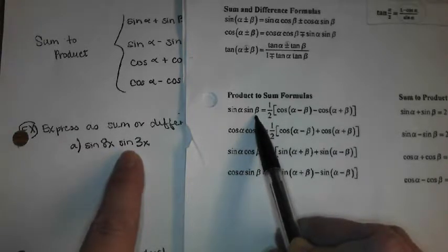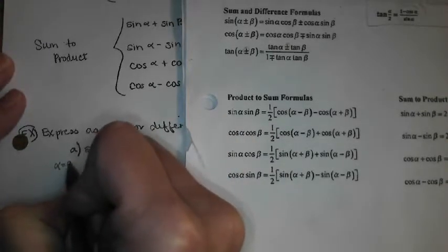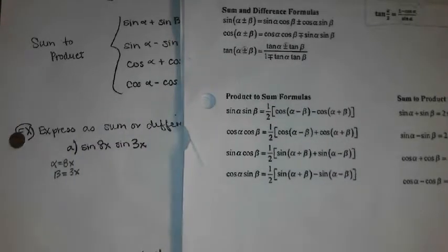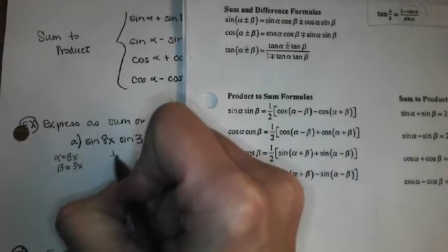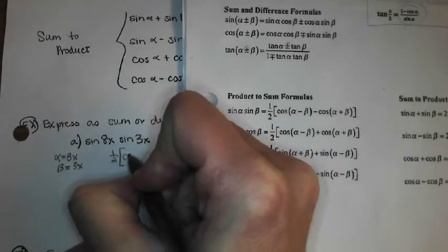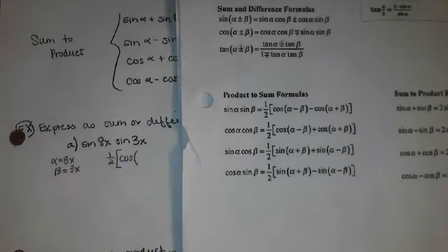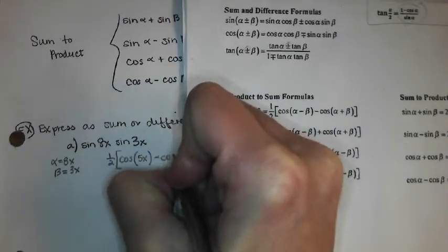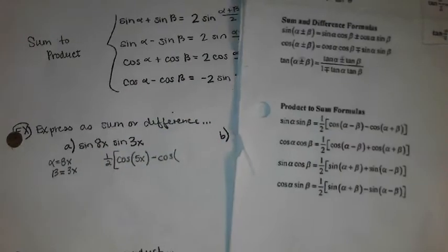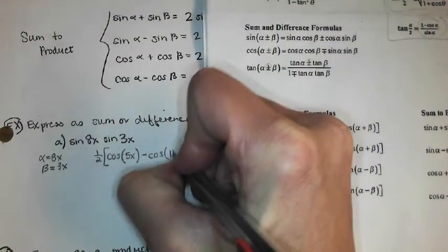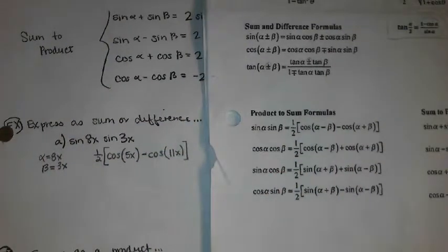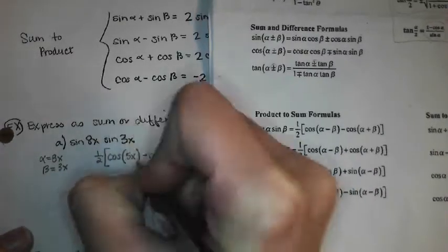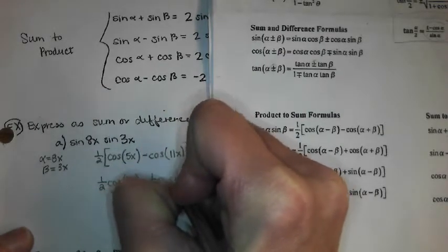What is our alpha? What is our beta? Okay. So now we're just going to use this formula. So it's one half, bracket, cosine of, what is alpha minus beta? 5x. Minus the cosine of alpha plus beta, 11x.